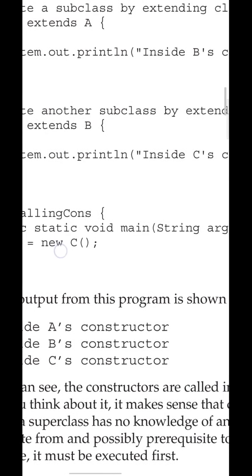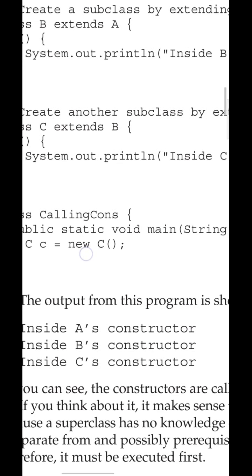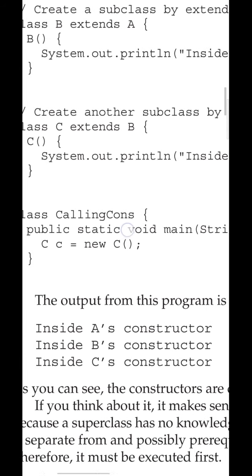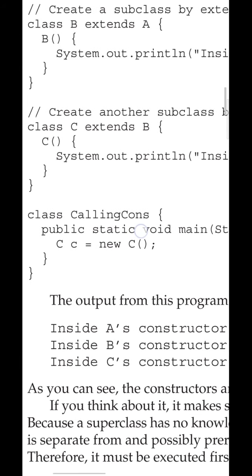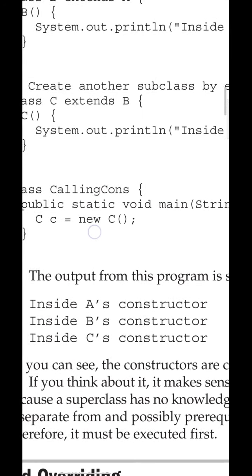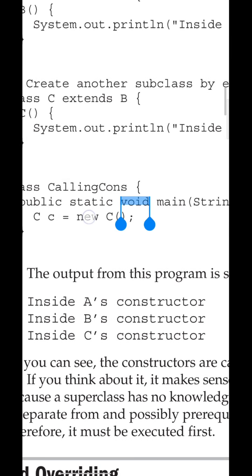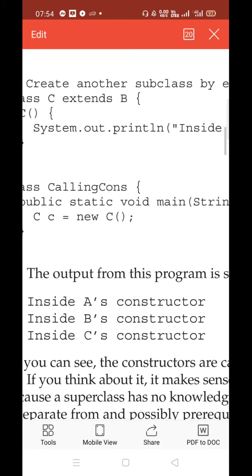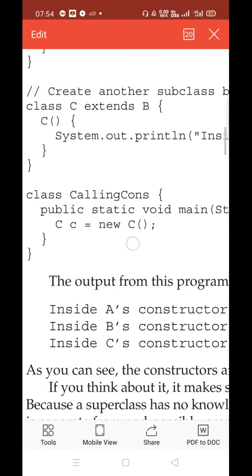The main function is included inside another class. We are creating the object of the subclass — the child class. C is the child, B is its parent, and A is the grandparent. Once the object is created, the constructor should be called — recall the definition of the constructor: constructors are called once the object is created.